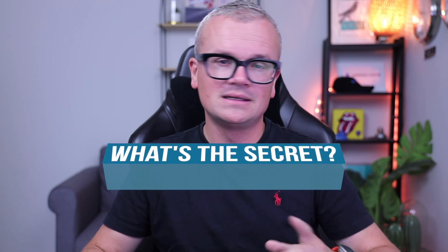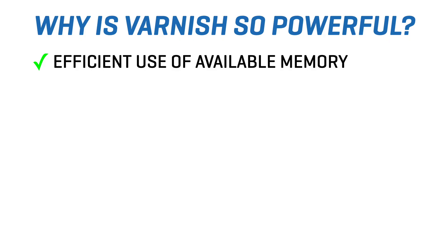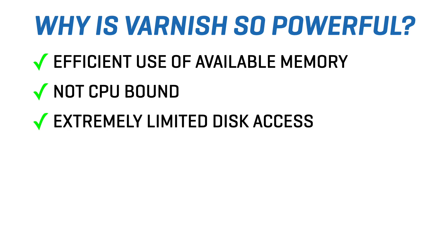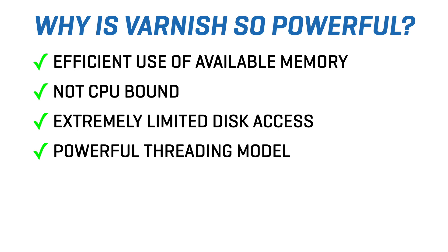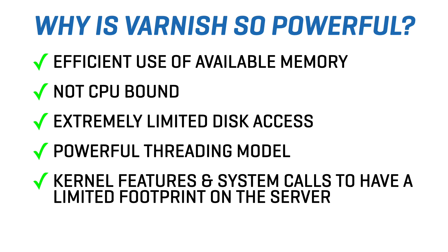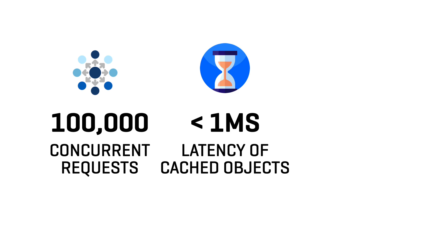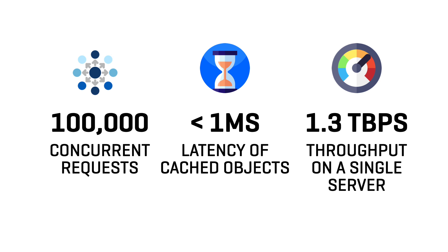What's the secret, you may ask? There's not really a secret — here's what we do. Varnish makes really efficient use of available memory. It's not CPU bound at all and it hardly accesses the disk, knowing that it is the slowest part of the system. Varnish also has a really powerful threading model that can handle a lot of concurrent requests, and it uses specific kernel features and system calls to have a very limited footprint on the system. It can handle up to 100,000 concurrent requests, deliver cached results with sub-millisecond latency, and process up to 1.3 terabits per second of throughput on a single machine, as benchmarked by Intel.